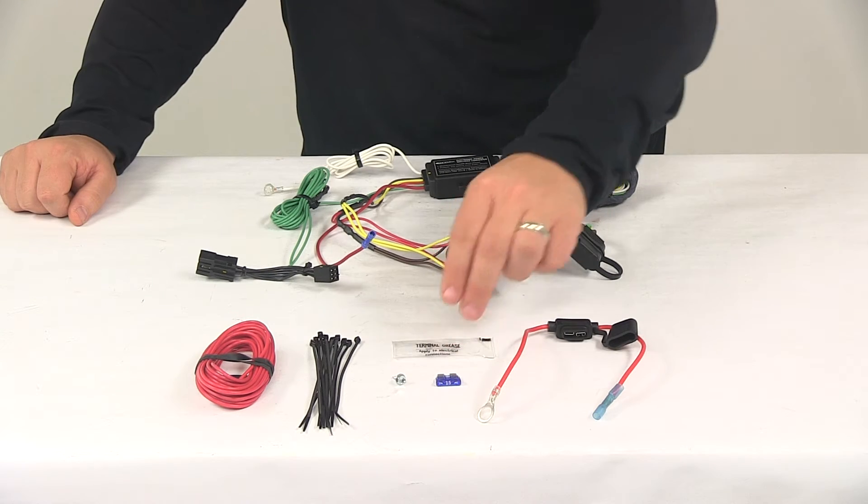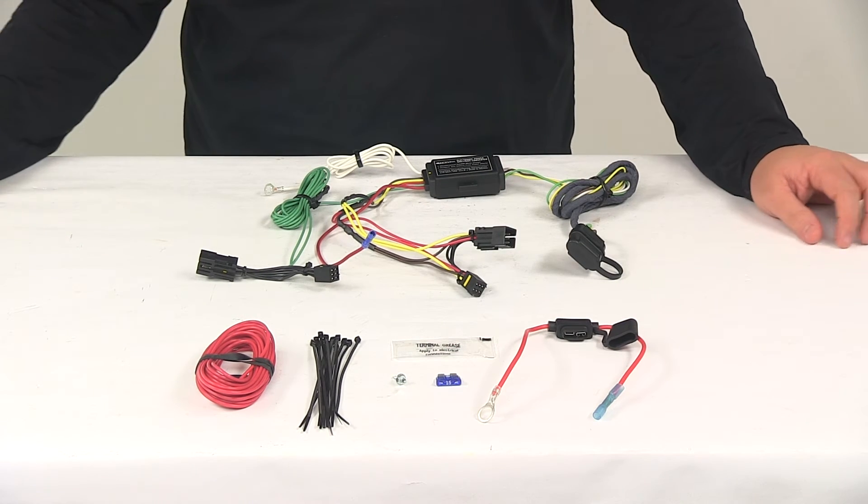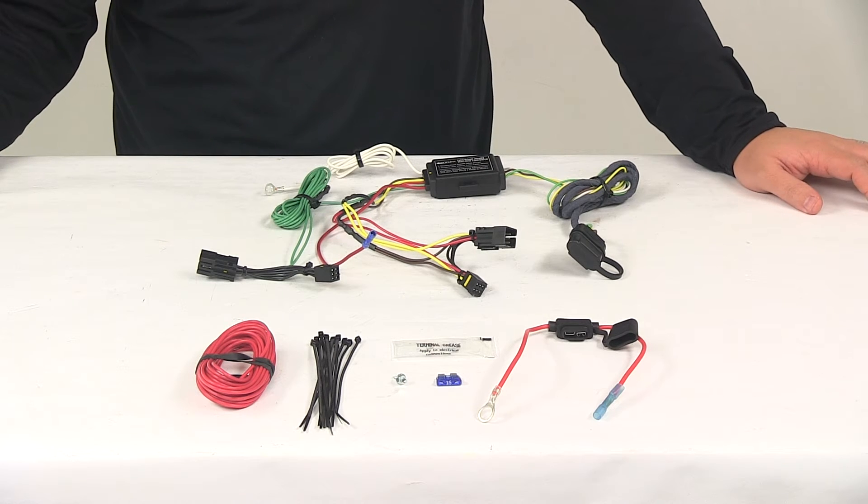When it comes to the maximum amperage for the stop and turn lights, we're looking at three amps per circuit. For the tail lights, it's six amps per circuit.